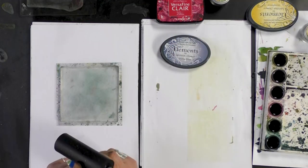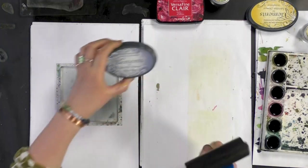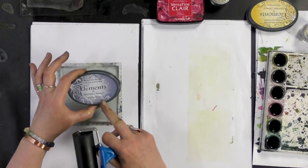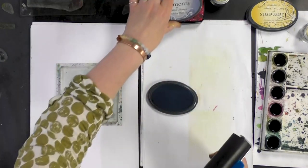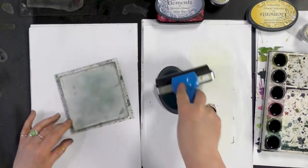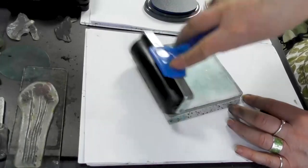Starting with your brayer, what we're going to do is transfer the lovely Della Blue onto the gel press, and this is just our base color.